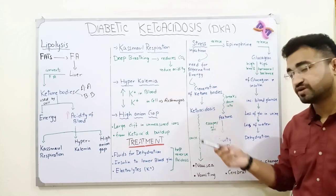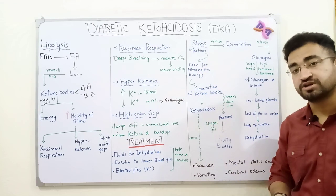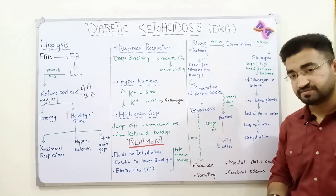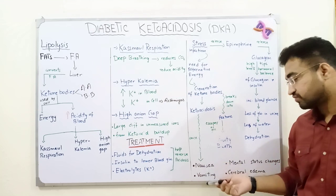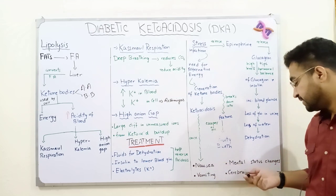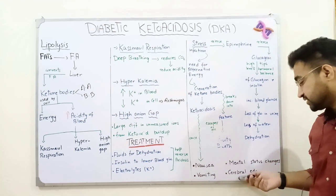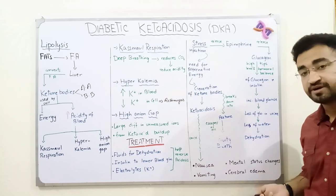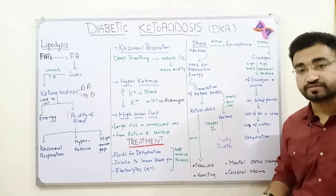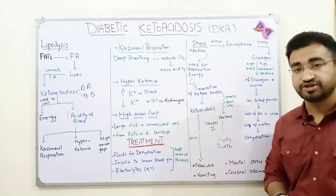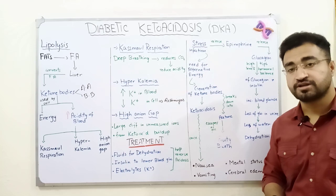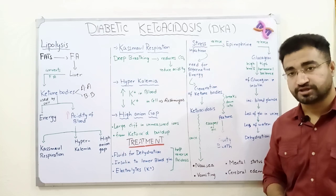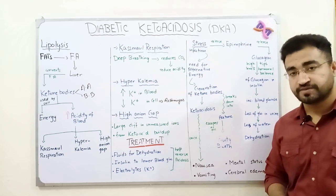When ketone bodies are produced, energy is obtained but ketoacidosis occurs — acidity in the blood increases. The symptoms of ketoacidosis include nausea, vomiting, mental status changes, cerebral edema, dehydration, polyuria, and polydipsia.